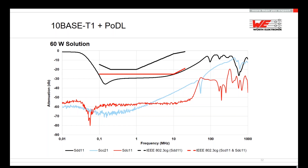What I'm showing now are simulations based on measurements — we measured the parts and put them into simulation, which is why you see some variation at low frequencies. The IEEE 802.3 return loss curve is shown, and our simulations are far away from this curve — well within requirements. Also for the 10BASE-T1 mode conversion loss, shown here is the IEEE limit, the simulation result, and in blue the common mode rejection. Everything looks fine.